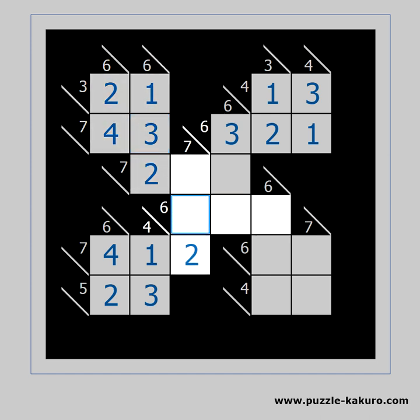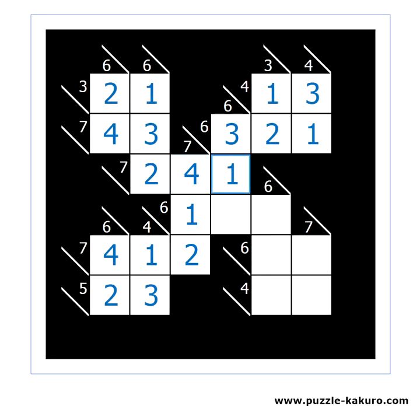The candidates for this cell are 1, 2 and 3 because of the 6 horizontally. It can't be 2 because we already have 2 in the vertical block. It can't be 3 because the 7 vertically can only have 1, 2 and 4. So it must be 1. We can now solve the 7 vertically, then the 7 horizontally, then the 6 vertically, then the 6 vertically, and then the 6 horizontally.